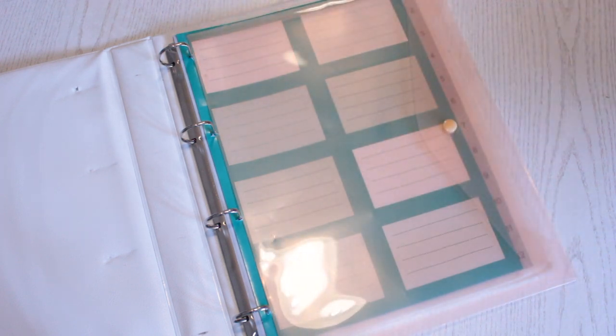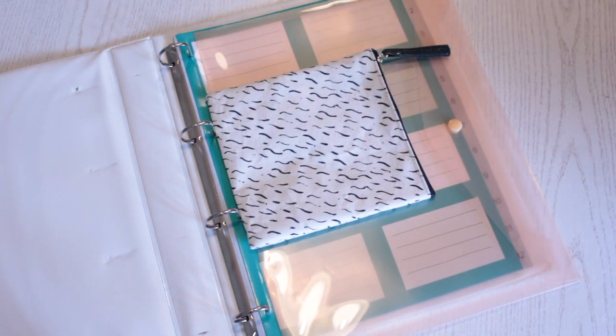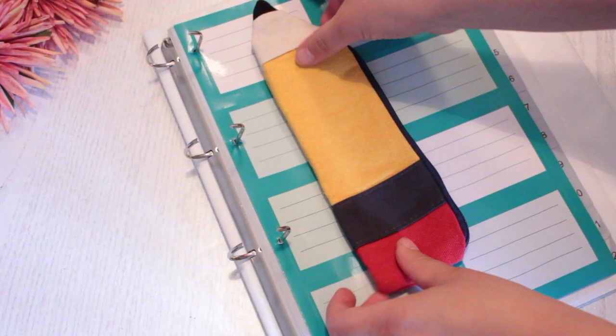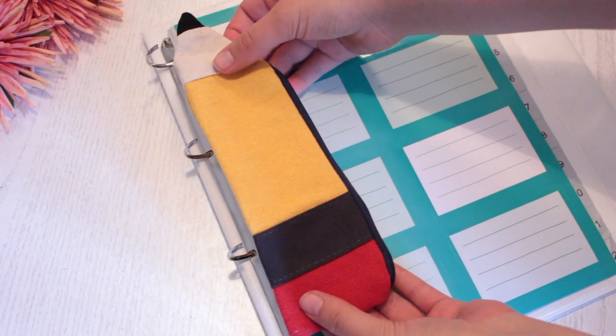To create these pockets for your binder, you can use any kind of pencil case that you like. Then open up the hooks of the binder and place the pencil case right into it.